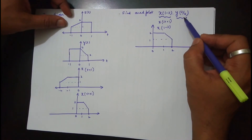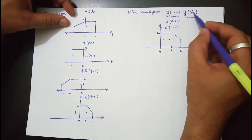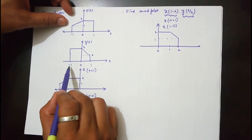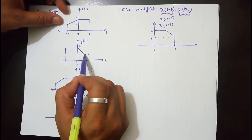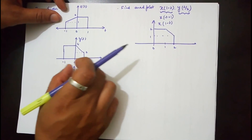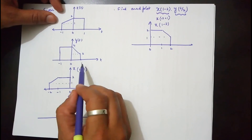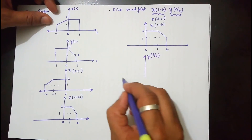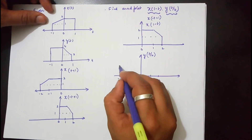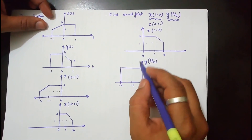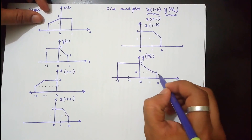The second waveform we need is y(t/2). The substitution t/2 is time scaling by a factor of 2, which expands the waveform. y(t) originally extends from -1 to 1, with amplitude 4 from -1 to 0 and declining to amplitude 2 at t=1. After expansion by factor 2, y(t/2) extends from -2 to +2, with amplitude 4 up to t=0 and amplitude 2 at t=2.